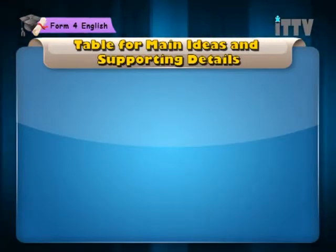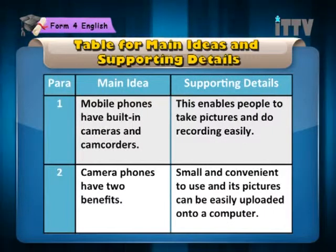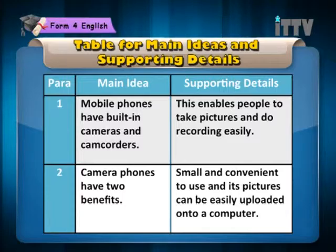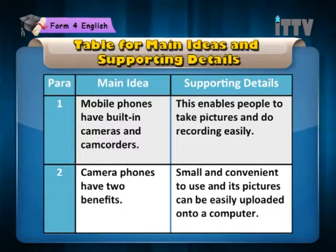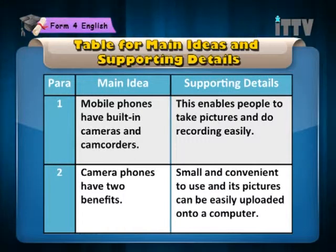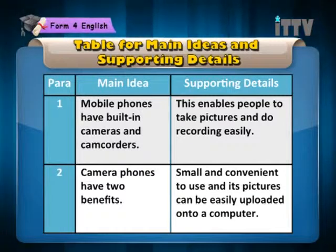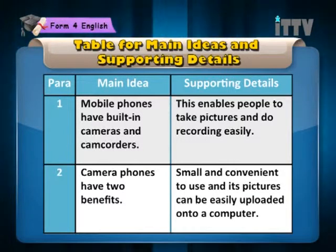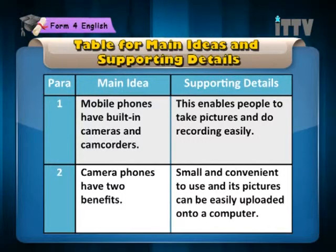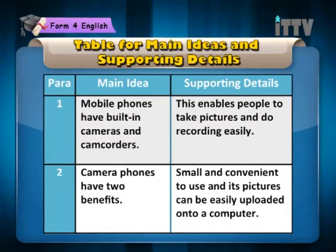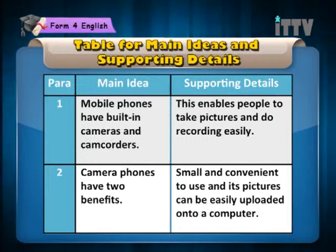Table for main ideas and supporting details. Paragraph 1: Main idea — mobile phones have built-in cameras and camcorders. Supporting details — this enables people to take pictures and do recording easily. Paragraph 2: Main idea — camera phones have two benefits. Supporting details — small and convenient to use, and its pictures can be easily uploaded onto a computer.